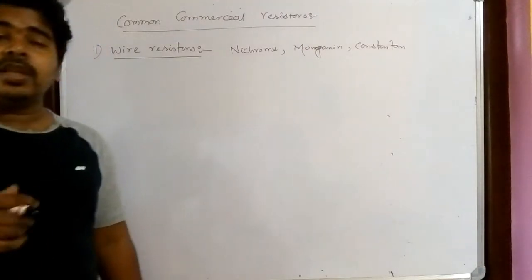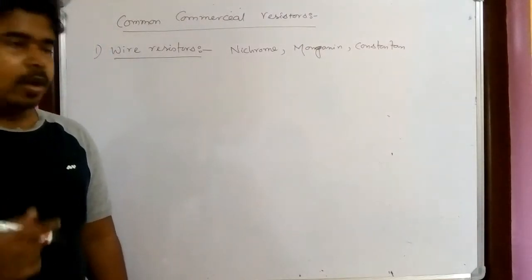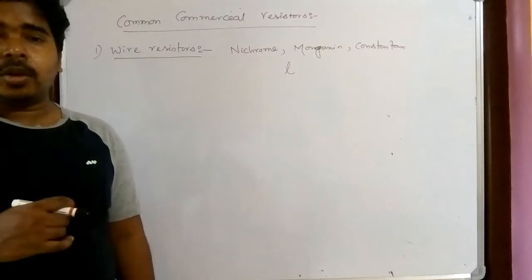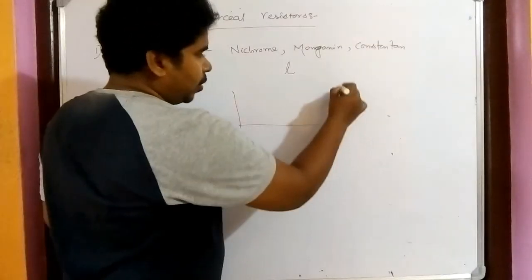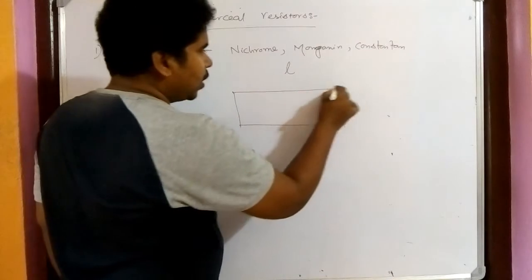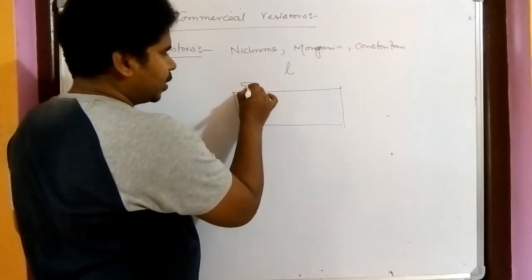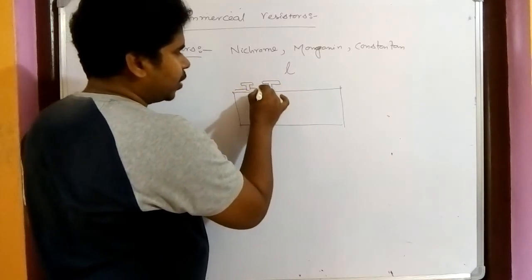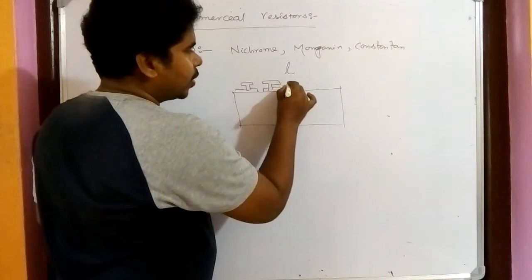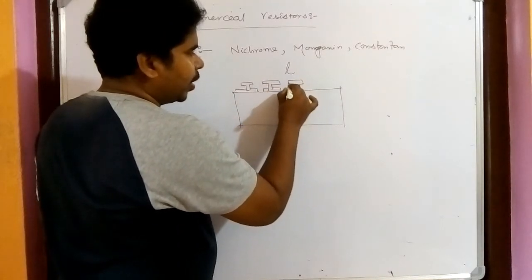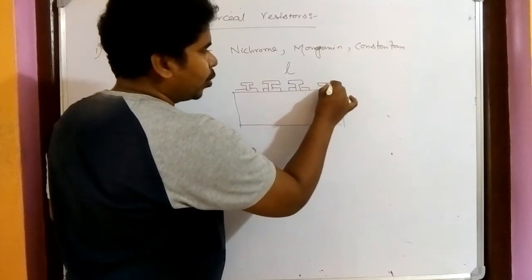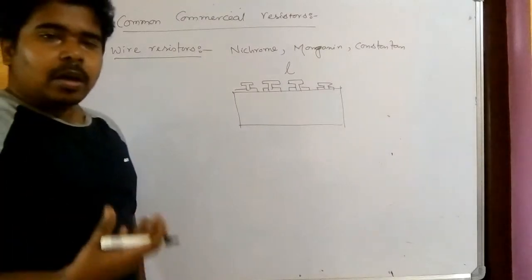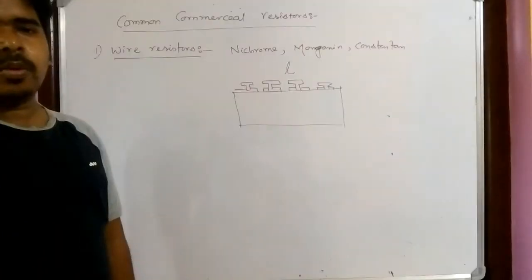To increase resistance in wire resistors, we increase the length of the wire. You may have seen resistance boxes in your lab — they have keys like this — where nichrome, manganin, or constantan wires are used to increase the resistance.